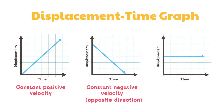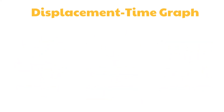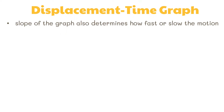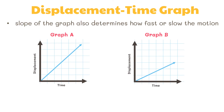A horizontal line shows that the object is not moving or at rest. The slope of the graph also determines how fast or slow the motion is. Look at these two graphs — both graphs represent a positive and constant velocity. However, the slope of the graph on the left is steeper than that on the right.